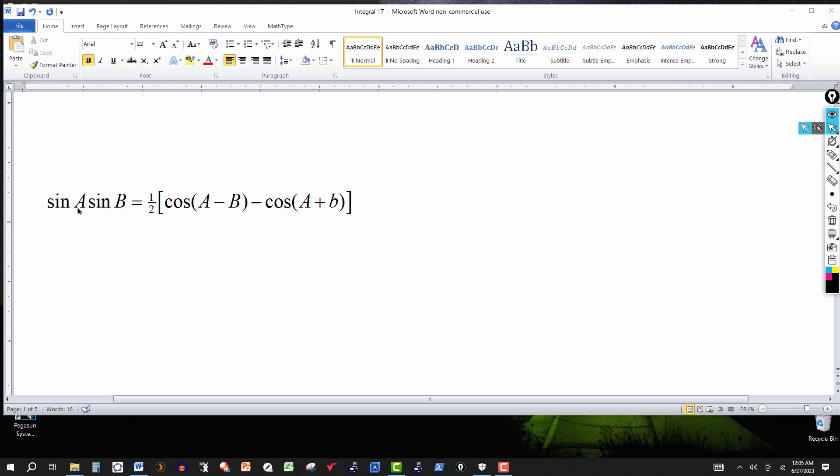Sine of angle A times the sine of angle B will be equal to one half, and then we have cosine of A minus B minus cosine of A plus B.